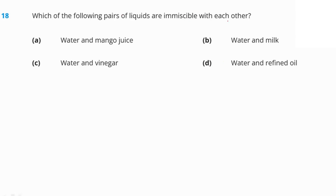Which pair of liquids is immiscible — meaning they cannot mix with each other? Water and mango juice, water and milk, and water and vinegar are all miscible. Water and refined oil are immiscible because refined oil, being lighter, floats on water. Option D is the right answer.